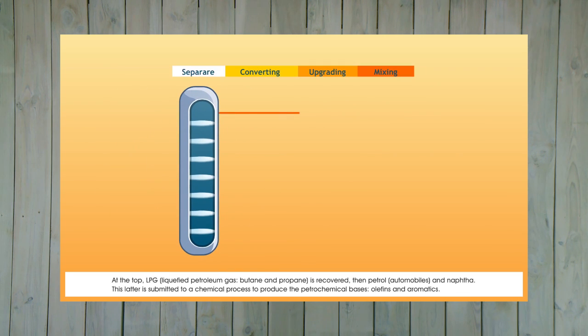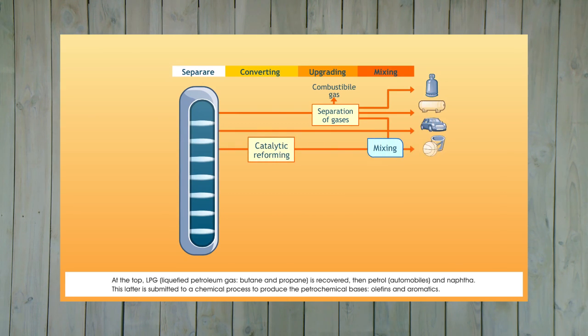At the top, LPG, liquefied petroleum gas, butane and propane is recovered. Then petrol for automobiles and naphtha. The latter is submitted to a chemical process to produce the petrochemical bases, olefins and aromatics.